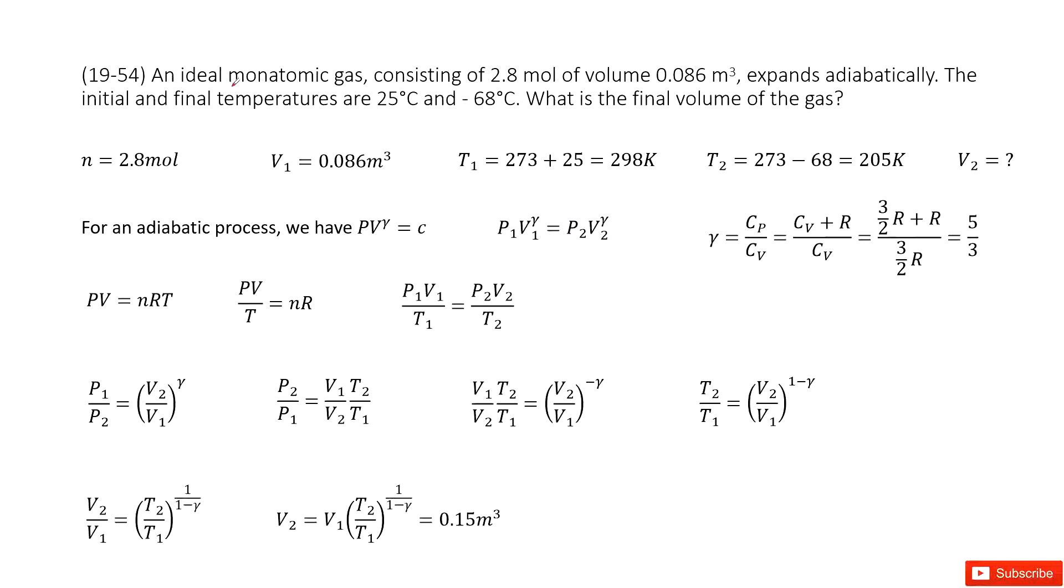Now we can see we have an ideal gas. It is a monoatomic gas, a circuit keyword. And it tells us the mole number, 2.8 mole, and initial volume V1 is given there. Initial temperature is 25°C, we can convert the unit as Kelvin. And the final temperature T2, as negative 68°C, convert the unit to Kelvin. The question asks you for the final volume.